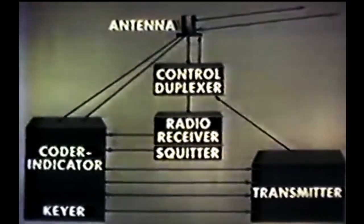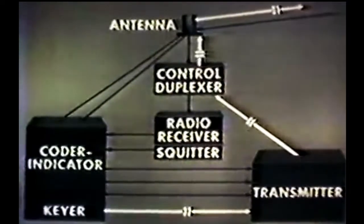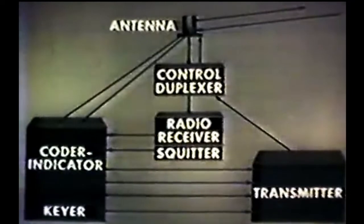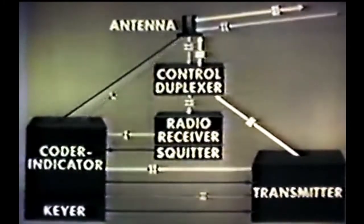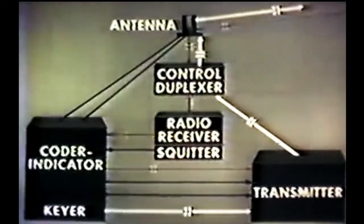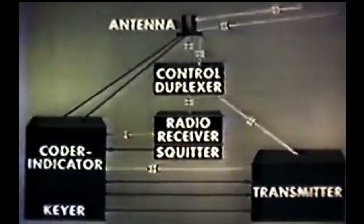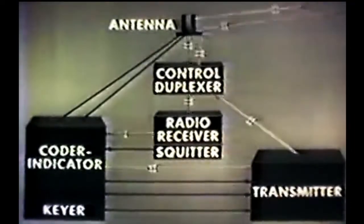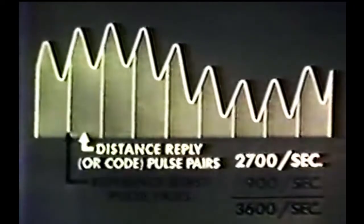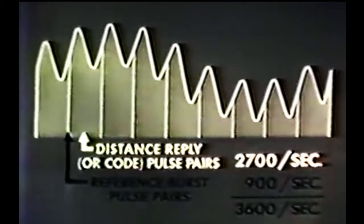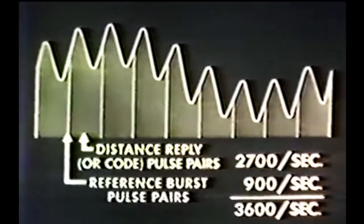The keyer in the coder indicator sends out the beacon's Morse code station identification call letters. We can now see that the URN-3 signal consists of fundamental and auxiliary reference burst pulse pairs, the distance interrogation reply pulse pairs, and the Morse code pulse pairs that momentarily replace the distance response pulses when the identification is transmitted. When the antenna rotates, the transmitter output is amplitude modulated and produces a pattern which gives this appearance on an oscilloscope. There are 900 reference burst pulse pairs per second and there are 2,700 distance response or Morse code pulse pairs per second for a combined total of 3,600 pulse pairs per second.